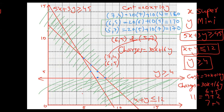Substituting into charges = 30X + 16Y: For (7, 4): 30×7 plus 16×4 = 210 plus 64 = $274. For (6, 5): 30×6 plus 16×5 = 180 plus 80 = $260. As a company manager, you want the highest charges. He asked for two options — we have (7, 4) giving $274 and (6, 5) giving $260.